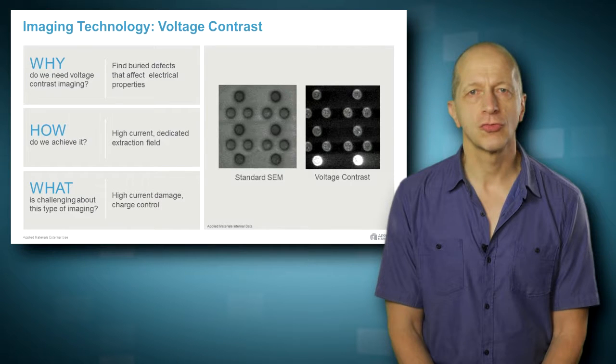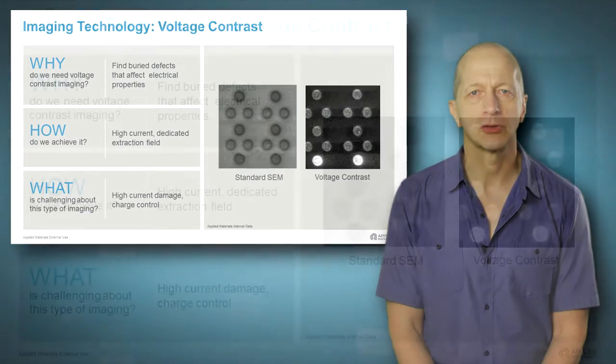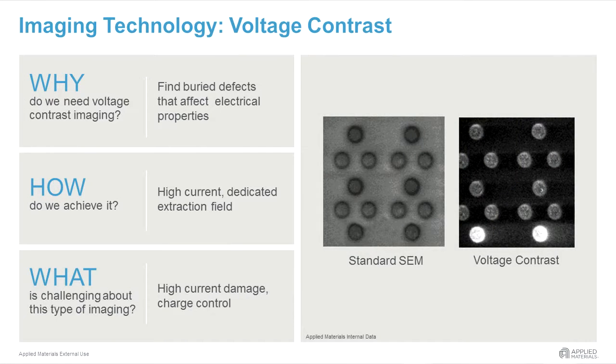The charging influences the energy of the emitted electrons. If the detection system is sensitive for this, voltages can be measured. The left image in the example is obtained without voltage sensitivity. In the right image, the detection system generates a brighter signal when it comes from a negatively charged area.